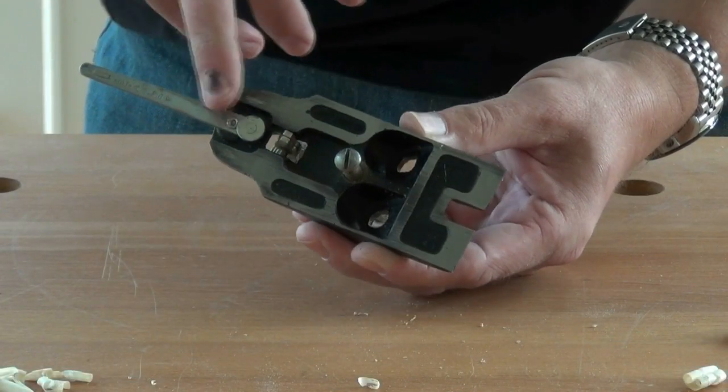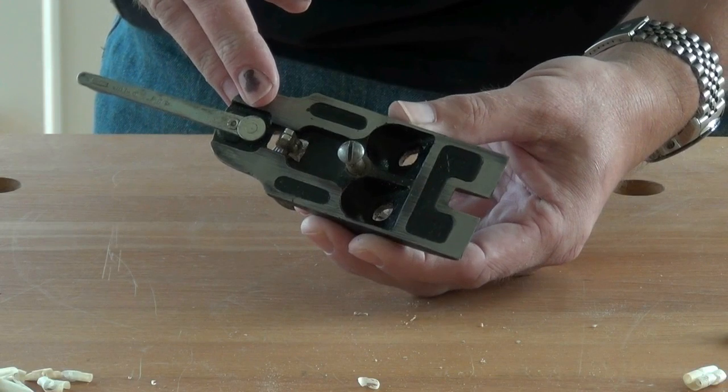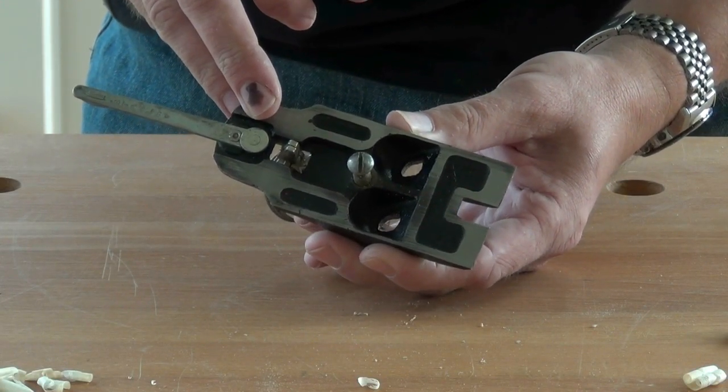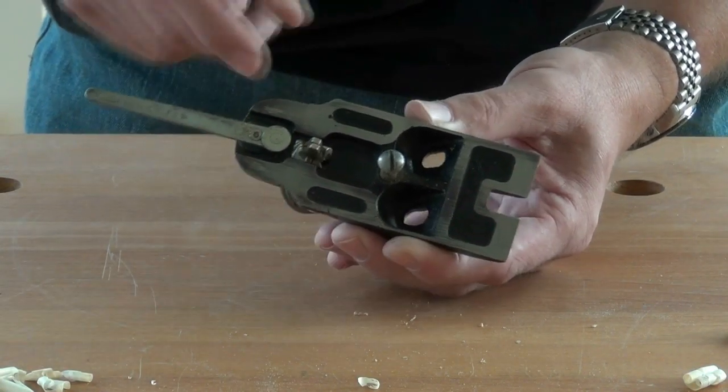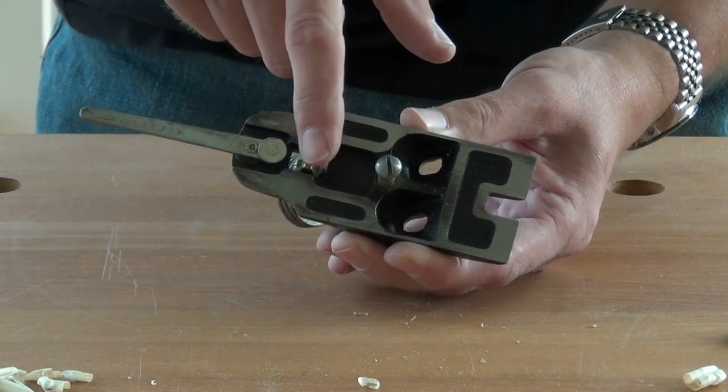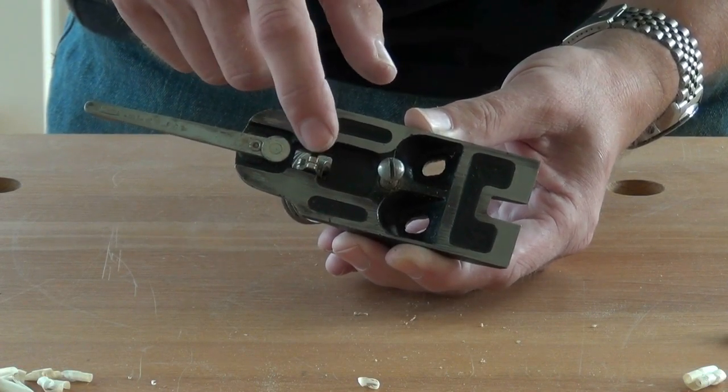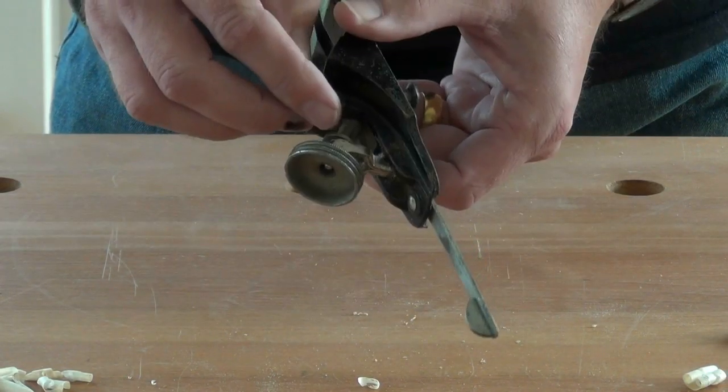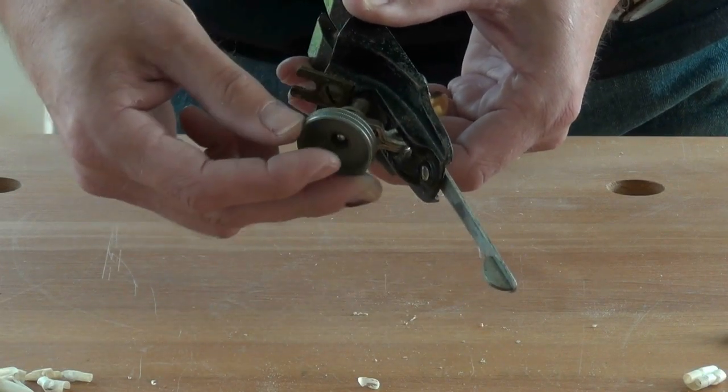The frog has a flat ramp which is machined at the factory and which you can probably improve upon yourself. It also has an advancement tang that comes through here and engages in the slot in the chip breaker. It passes through the frog and is coupled to this knurled knob for advancing and retracting the blade.